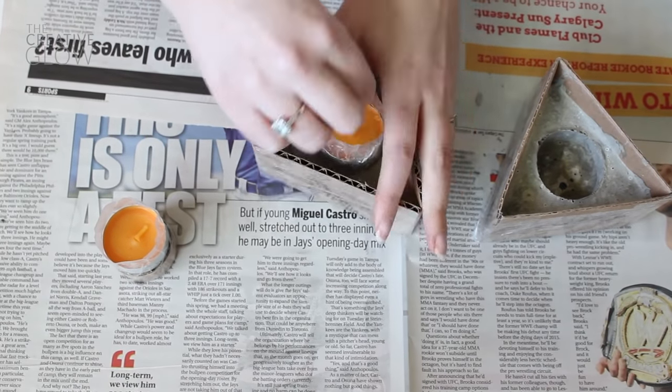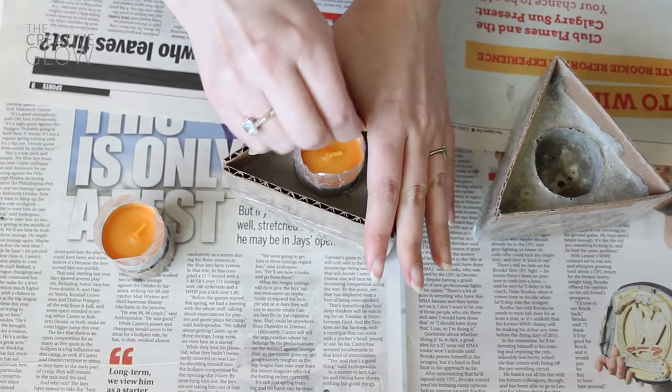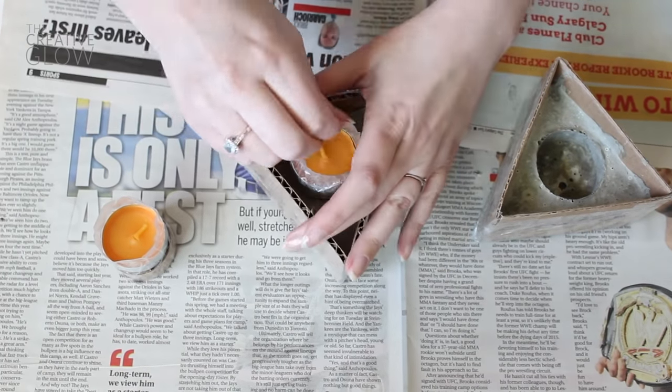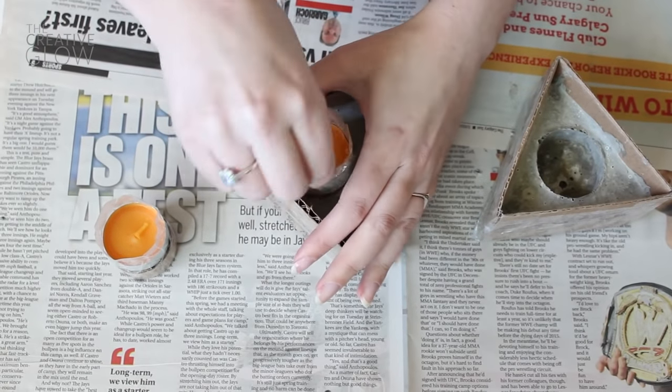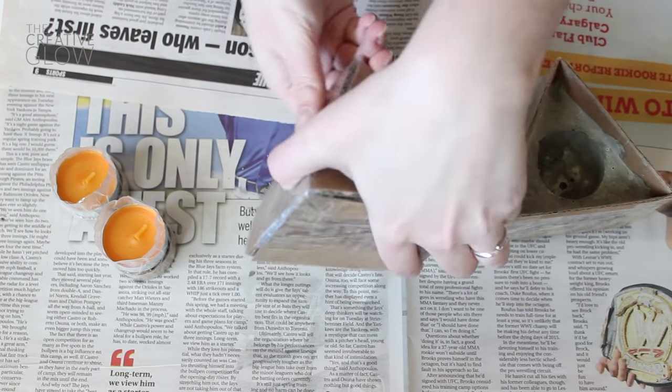Now your cement should be hard enough to remove the candle stack from the center. With your form sitting on the table place your hand firmly over the top of it and start trying to wiggle that stack out. This may take a little bit of work but eventually your stack will pop out. Once you've removed all your stacks let your cement set up for another hour.